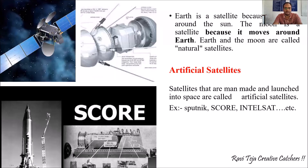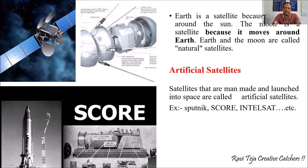The earth is a satellite because it moves around the sun, and the moon is a satellite because it moves around the earth. So the earth and moon can be considered as natural satellites.